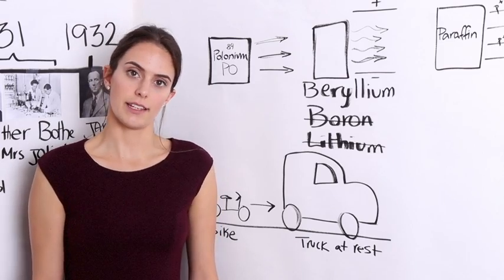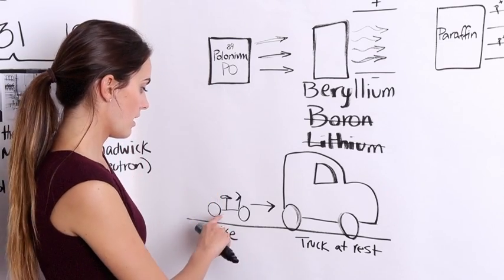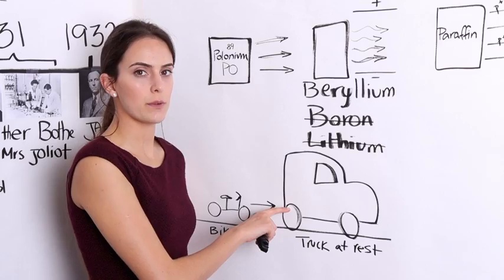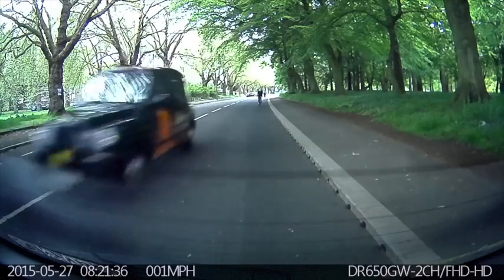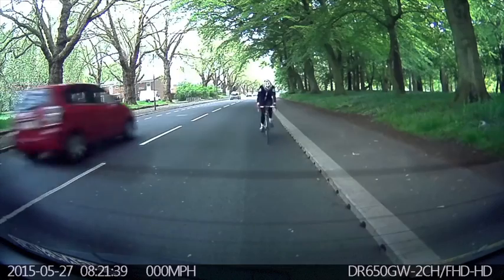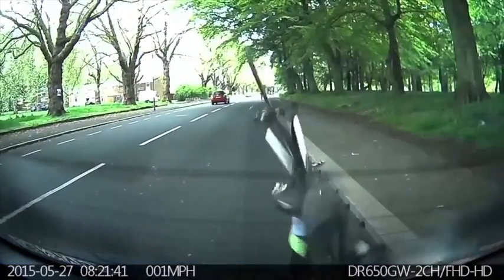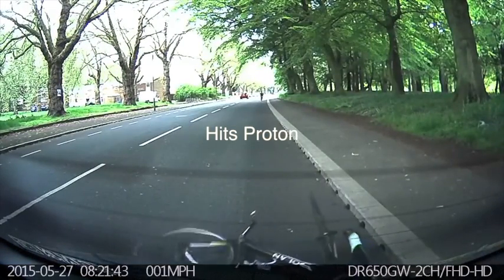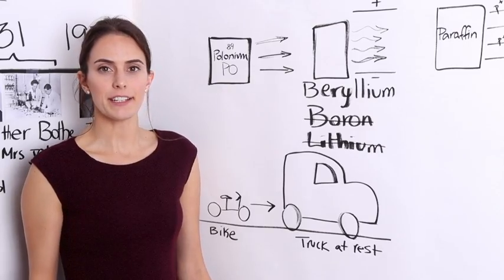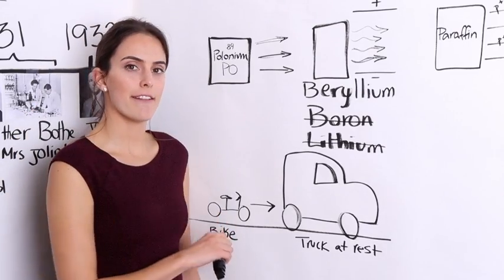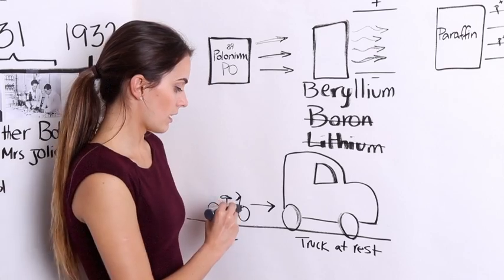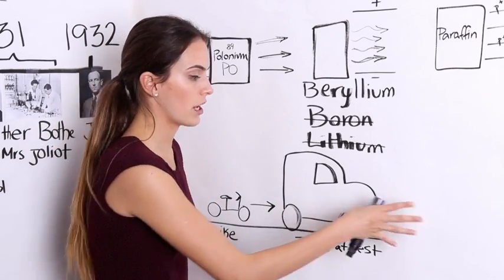A good analogy to this would be a bike coming into direct contact with a truck standing at rest. It would be very difficult for the bike, even at very high speeds, to crash into the truck and have the truck move.